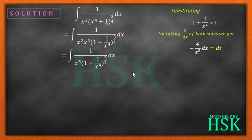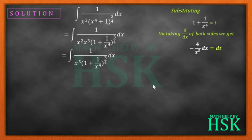Now we can substitute 1 upon x to the power of 5 dx in terms of dt — all those terms are going to disappear. For the bracket I'm going to place t. So I can write 1 upon x to the power of 5 dx is equal to minus 1 upon 4 dt.